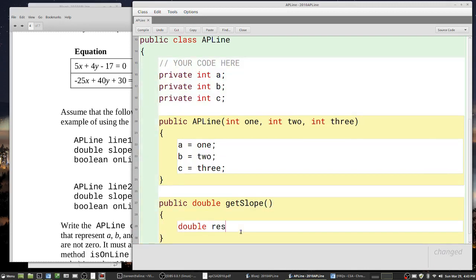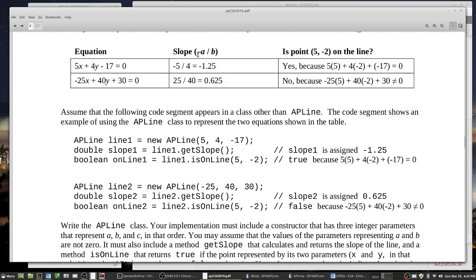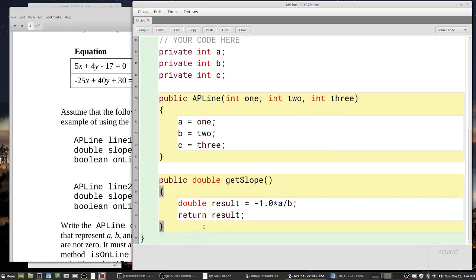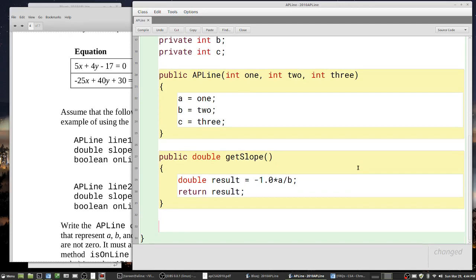Make a variable, double result. I can pretty much just put this equation in - the simple equation minus a divide by b - but there's a small issue in the sense that when you have a divide like this in Java, you have to force a decimal divide. You need to multiply it by 1.0 - minus 1.0 times a divide b - so that will force the decimal divide rather than an integer divide. Return result. That is the getSlope method.